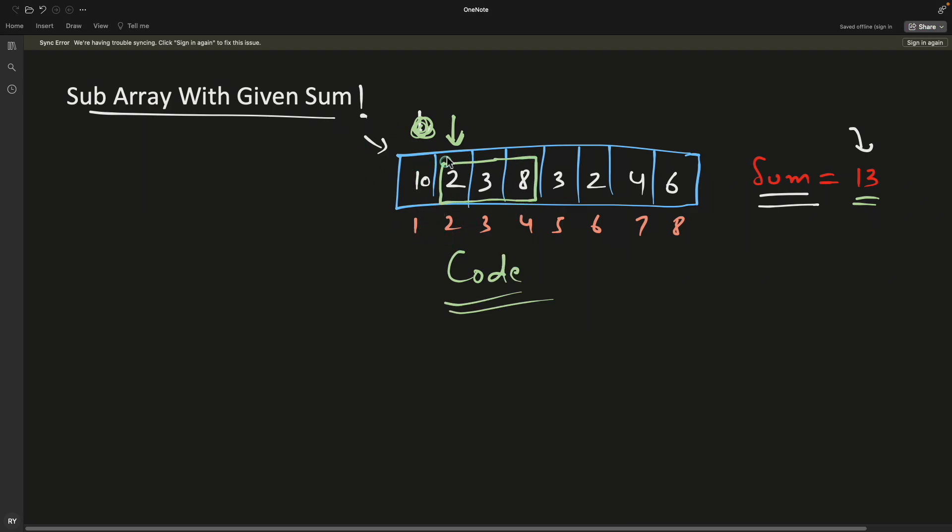Now before going to the code, let me quickly say that to handle this window, in order to actually create this window, you need a start pointer. You will need S or start, initially you will initialize them with zero and zero. You will notice I am keeping this index from one, you can keep it with zero also, no problem. So this is like a typical two pointer problem.